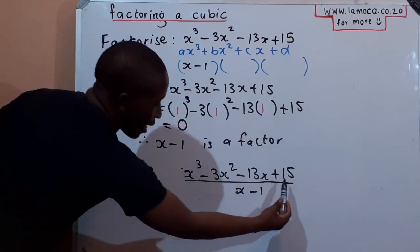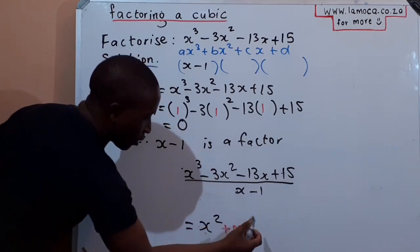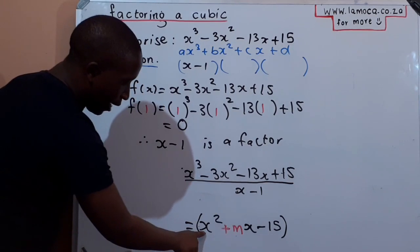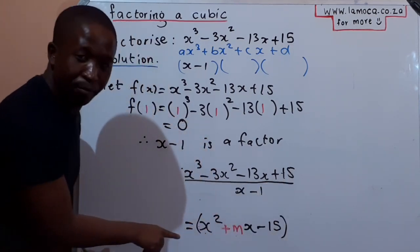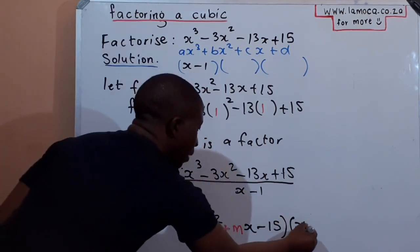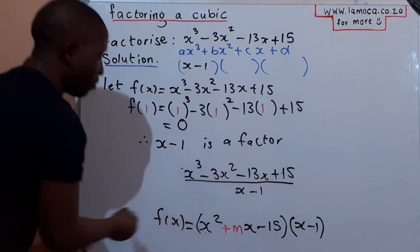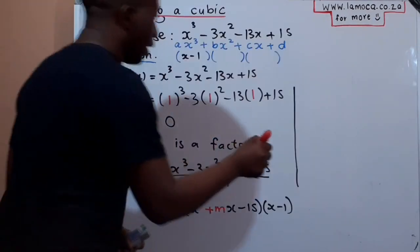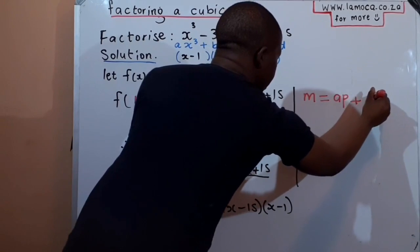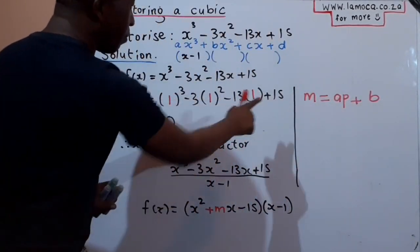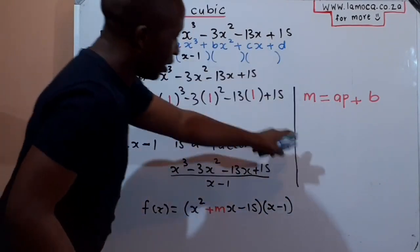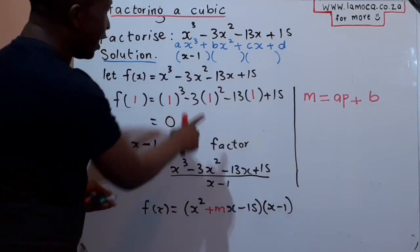For the last term, you do 15 ÷ (-1) = -15. So we now have x² + mx - 15 as our quotient, multiplied by (x - 1). We know x³ ÷ x = x², and 15 ÷ (-1) = -15; we just don't know the middle term — that's the monkey term, which we'll work out using 'monkeys eat apples plus bananas'. Once we know m, we are done with the factorization.